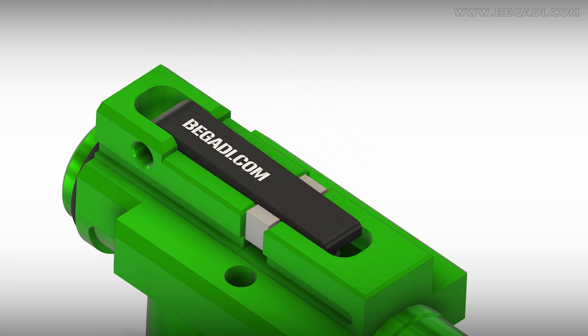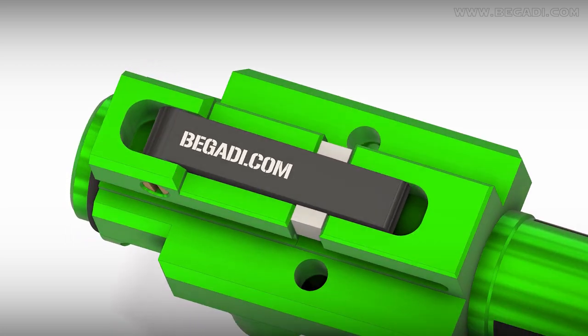You can now assemble the hop-up arm along with the brass screw. Note, the screw should be tightened flush.